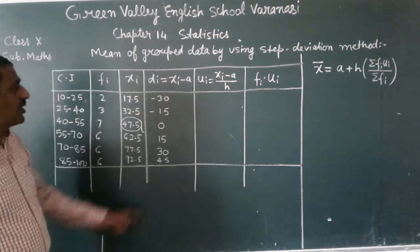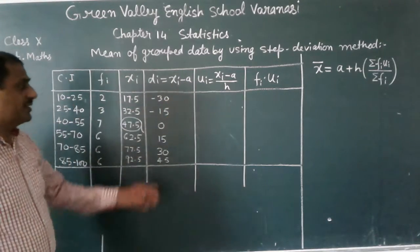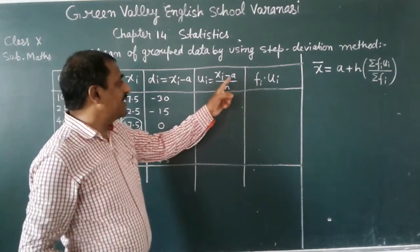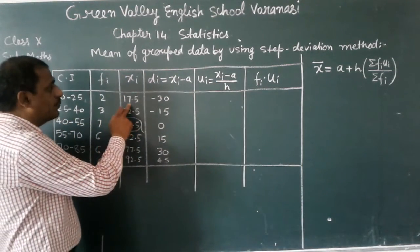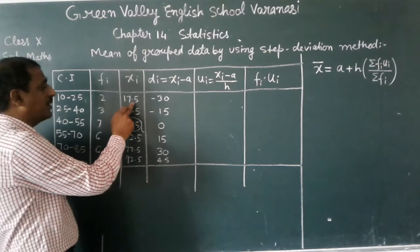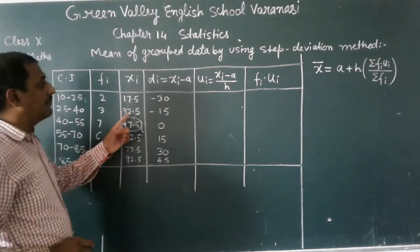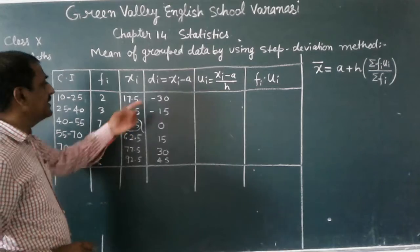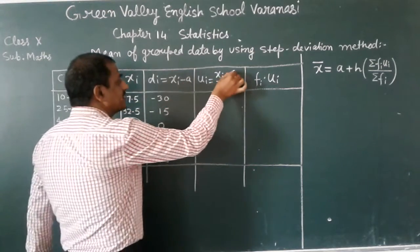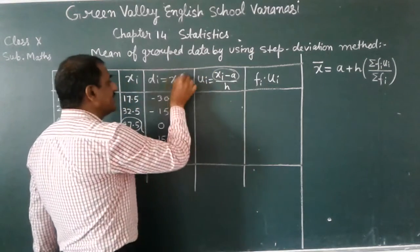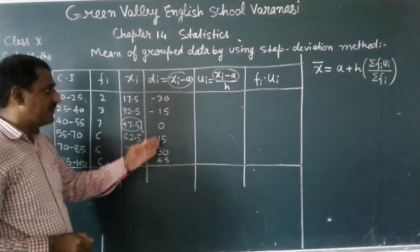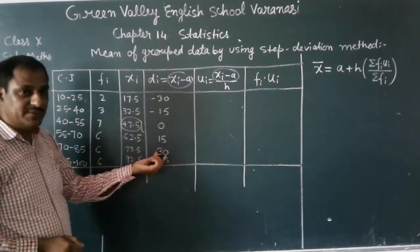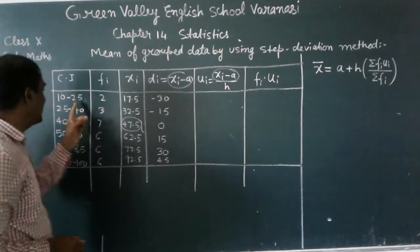Now in the next column, ui. Here ui is what? ui is xi minus A upon h. Here xi minus A is this value. If you will divide this observation by the class size, the class size is 15, because the difference between the lower limit and the upper limit is 15.